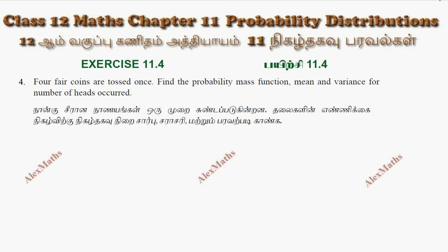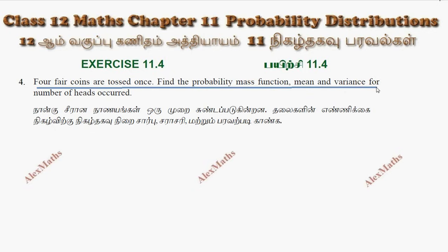Hi students, this is Alex here. Exercise 11.4, question number 4: 4 coins are tossed once. We will find the probability mass function, mean, and variance for the number of heads occurred.